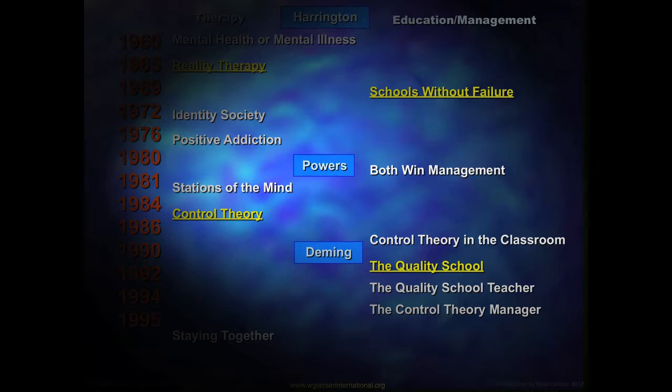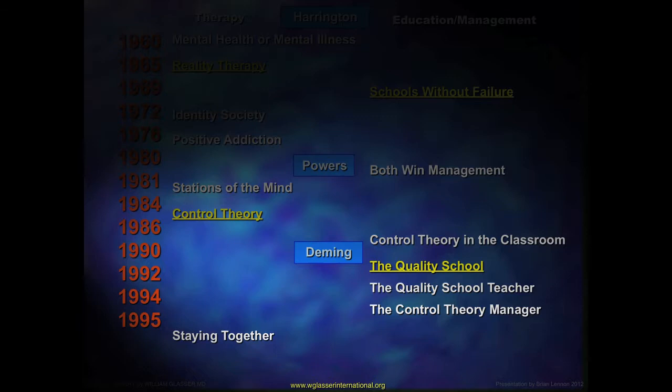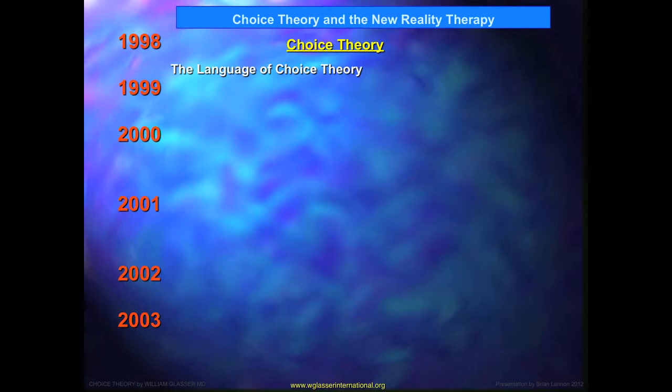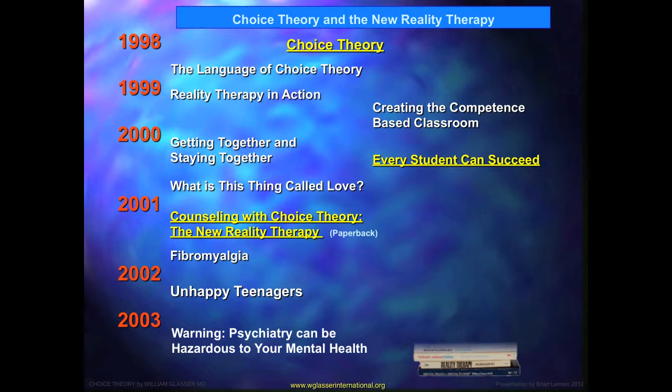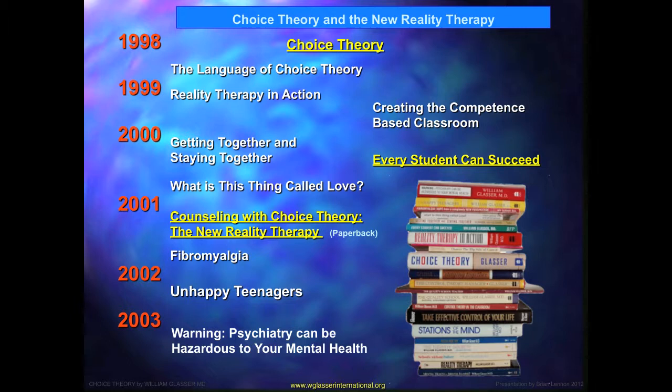Around the 1990s, Glasser became more familiar with the work of Edward Deming, the statistician who helped post-war Japan rebuild and create its industrial success. From this, Glasser adapted ideas into the Quality School, the Quality School Teacher, the Control Theory Manager, and Staying Together. By 1998, the name Choice Theory was more meaningful than Control Theory, as his ideas had travelled a long way and there were critical differences.